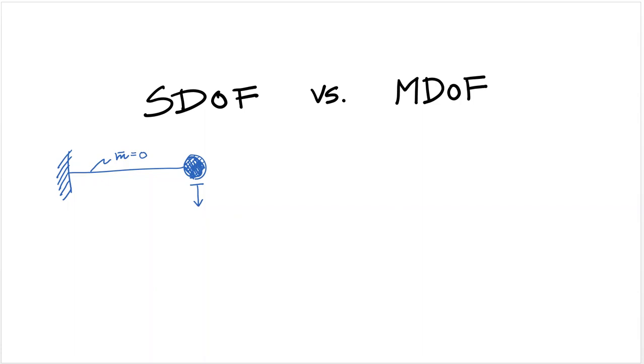Or any other system like that. So you could even have, let's say something like this, a frame, a two-story frame with no mass except a mass here at the top. Now, if you know the response of that coordinate, you can infer the response of the rest of the structure by just knowing the stiffness matrix. So these are all examples of single degree of freedom systems.